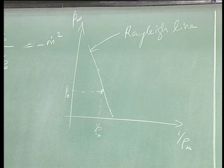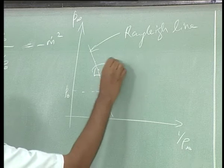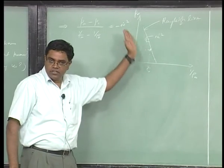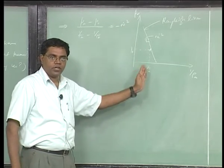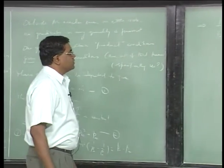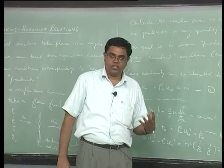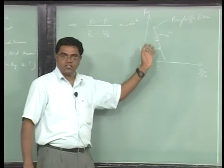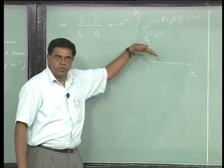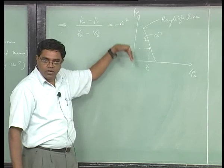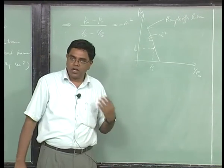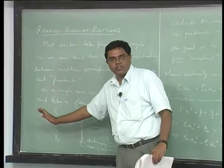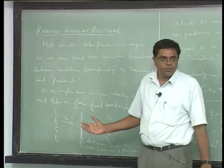This line is called the Rayleigh line, and its slope is essentially ṁ². The flow information is hidden in ṁ — a shallow line means low ṁ (slow flow), a steep line means high ṁ (fast flow). This in turn tells us how fast a wave would propagate into still reactants.